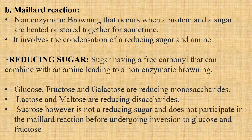Reducing sugars are those that have a free carbonyl group which can combine with the amine of amino acids, causing non-enzymatic browning. It is called non-enzymatic browning because no enzyme is involved in causing the browning. Glucose, fructose, and galactose are reducing monosaccharides. Lactose and maltose are reducing disaccharides. Sucrose, however, is not a reducing sugar and does not participate in the Maillard reaction before undergoing inversion to glucose and fructose.